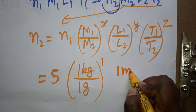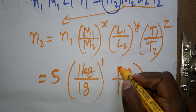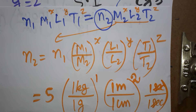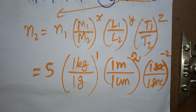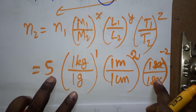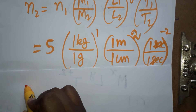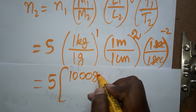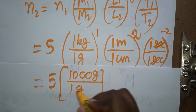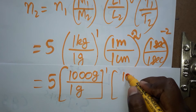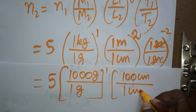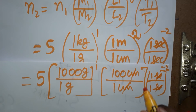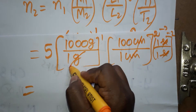Substituting: L1 = 1 meter divided by L2 = 1 centimeter, with power y = 2. T1 = 1 second divided by T2 = 1 second, with power z = −2. The seconds cancel out, giving 1^(−2) = 1.